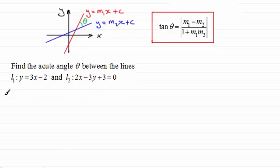So in order to do this, we've got to get the respective gradients. So for line L1, we know that y equals 3x minus 2, and it's already in the form mx plus c. So from this it follows that we could say m1 is equal to 3.